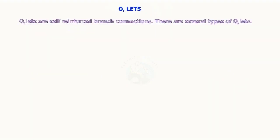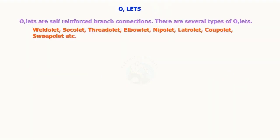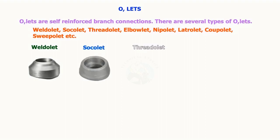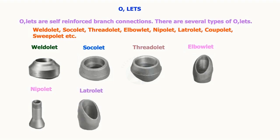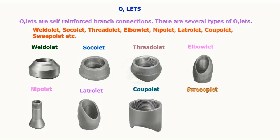Olets are self-reinforced branch connections. There are several types of olets: Weldolet, Sockolet, Threadolet, Elbolet, Nipolet, Latrolet, Coupolet, Sweepolet, and others.